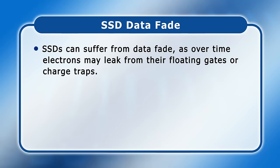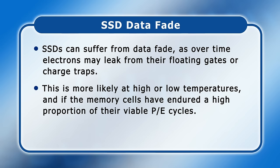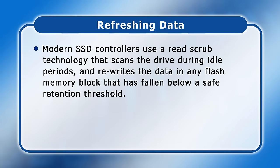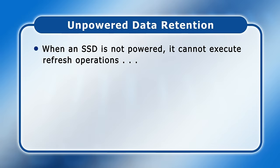SSDs can suffer from data fade as, over time, electrons may leak from their floating gates or charge traps. This is more likely to occur at high or low temperatures, and if the memory cells have endured a high proportion of their viable PE cycles. To mitigate this problem, modern SSD controllers use a read-scrub technology that scans the drive during idle periods, and rewrites the data in any flash memory block that has fallen below a safe retention threshold. In theory, this means that a regularly powered SSD ought to be able to retain data for the full life of the drive. Unfortunately, when an SSD is not powered, it cannot execute refresh operations, and this will limit how long data is retained.